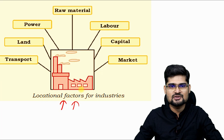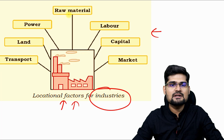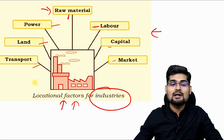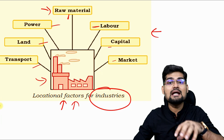If you observe the locational factors for industries — which we have talked about in previous sessions — for manufacturing, these seven things are very important: raw material coming from the primary sector, then power, labor, capital, land, market and transport. All these things need to come together to make the secondary or industrial sector work and locate in a particular place.